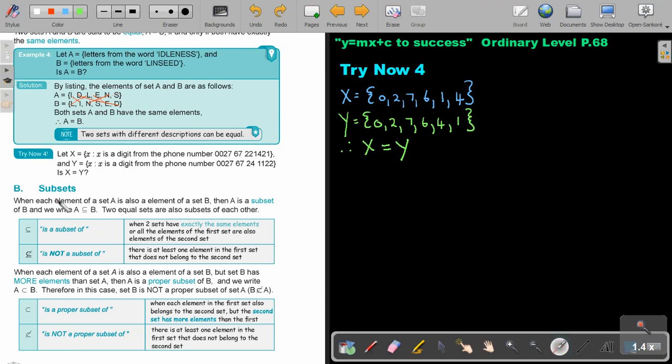Subsets. When each element of set A is also an element of set B, then A is a subset of B, and we write A is a subset of B. Two sets are also a subset of each other.